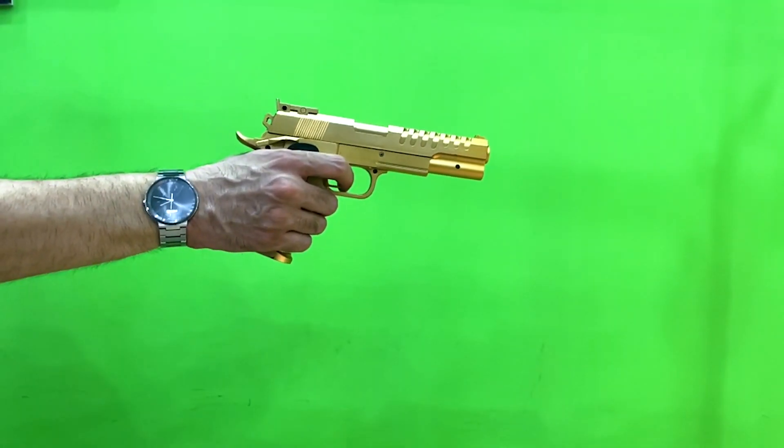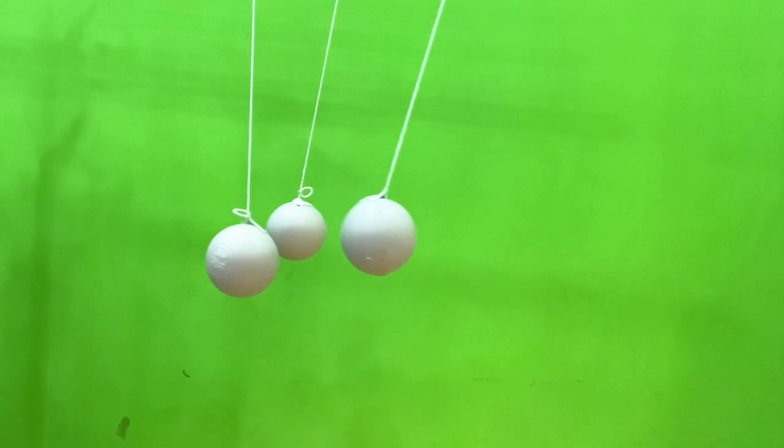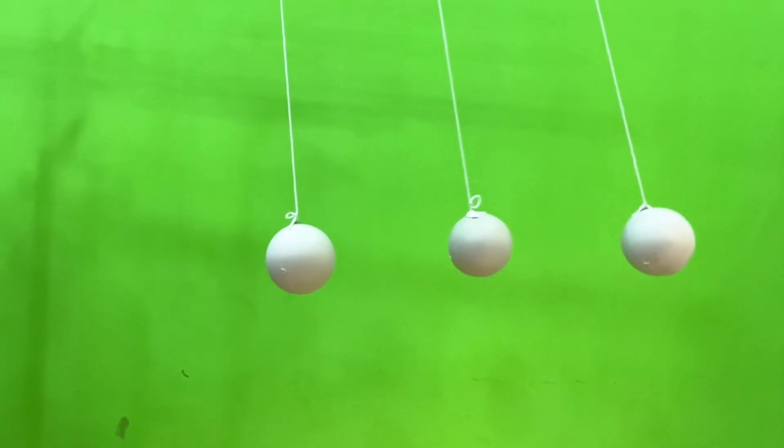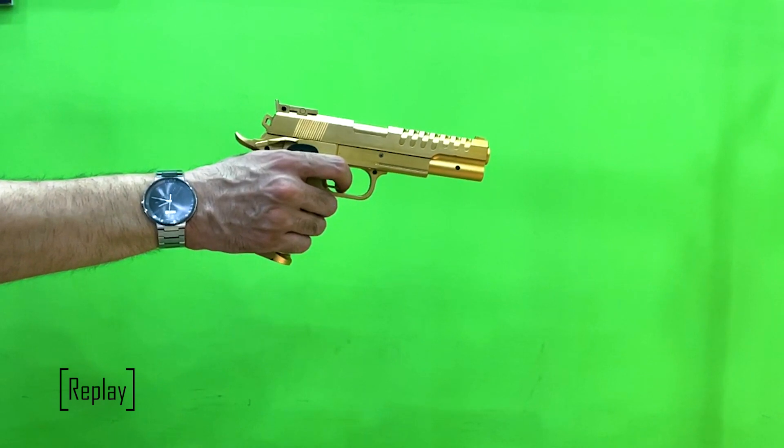A bullet is fired into the first plastic ball hanging from one 50 centimeter long string. The bullet embeds itself into the ball and the ball then swings out to an angle. It then hits the second ball which ultimately hits the third ball.